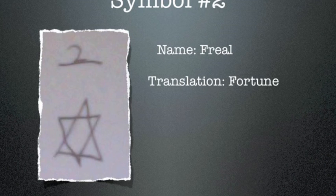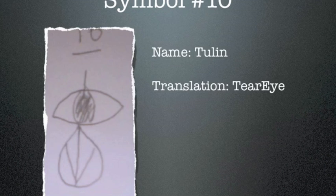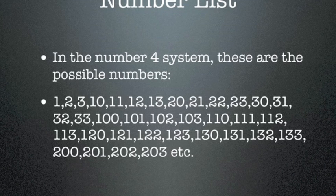Symbol number two: name Frio, translation 'fortune.' Symbol number three: name Suwap, translation 'semi.' Symbol number ten: name Tulip, translation 'tier.' In the base-four system, these are the possible numbers.